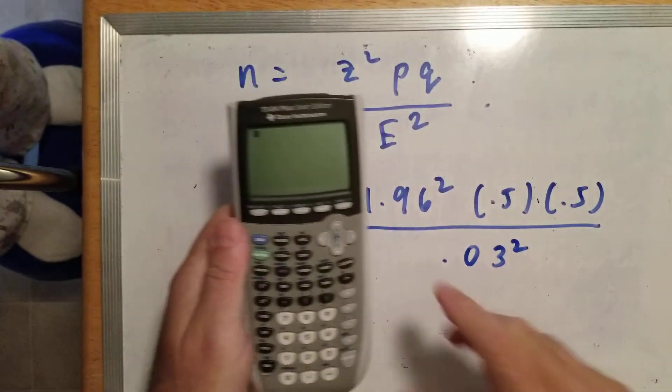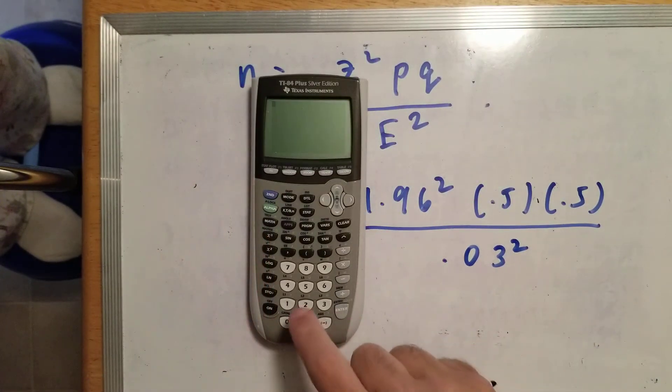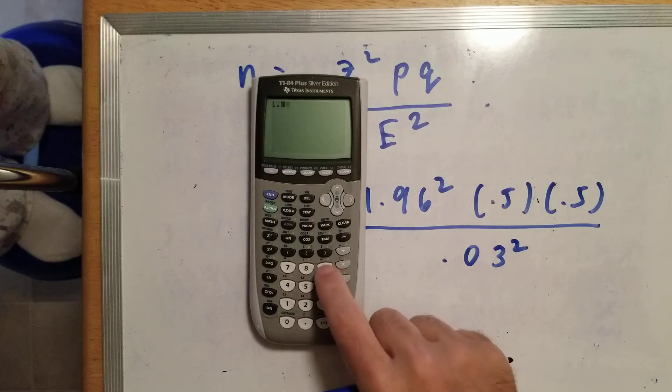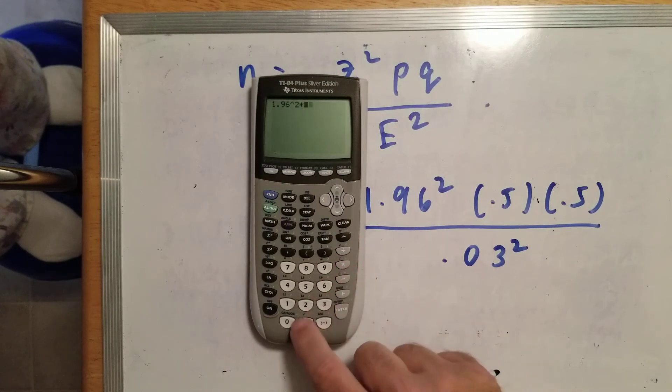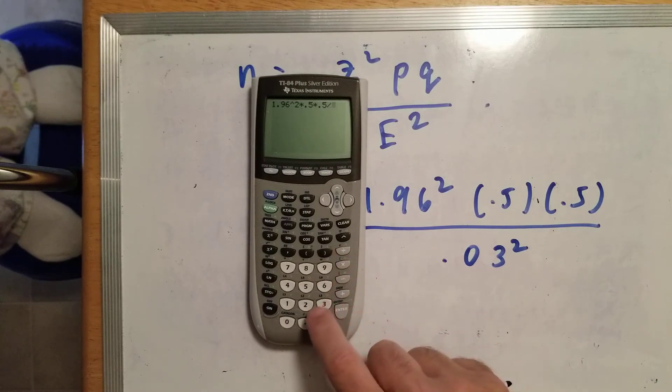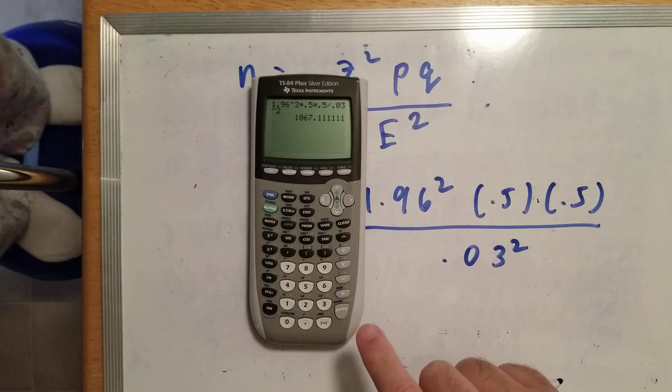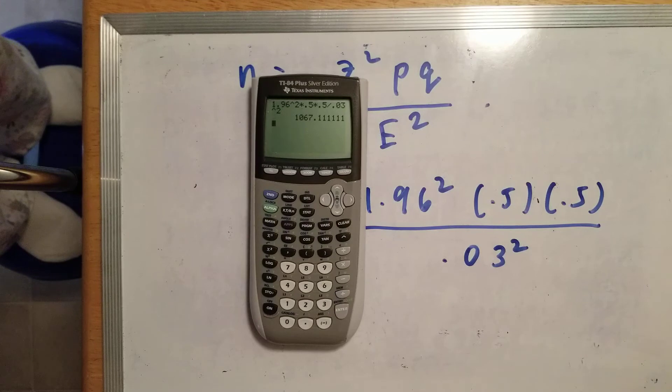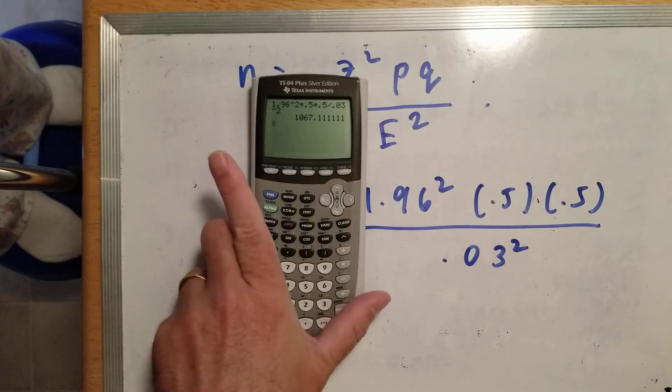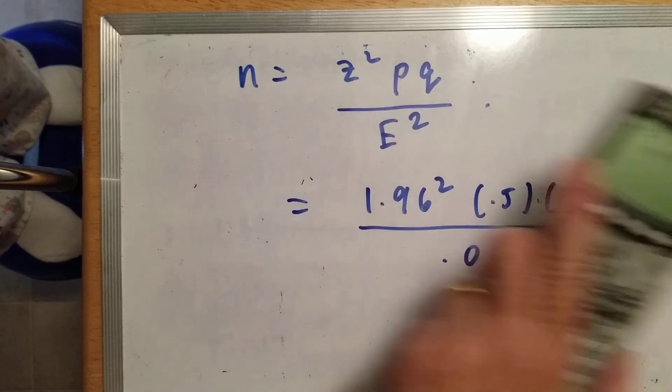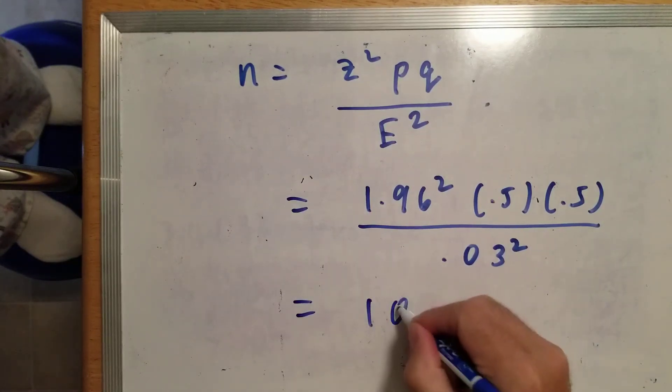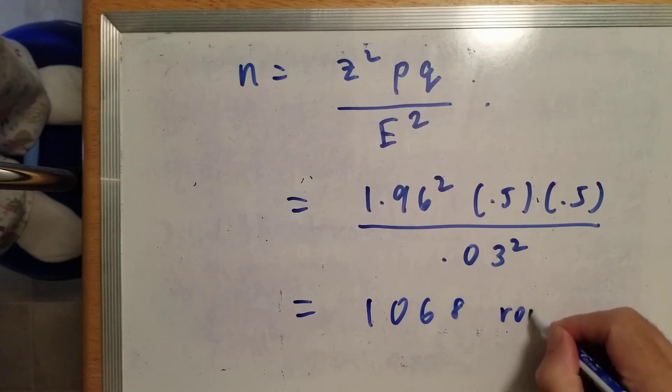1.96 squared times 0.5 times 0.5 divided by 0.03 squared equals 1067.11. We always round up. So instead of 1067, the answer is 1068.